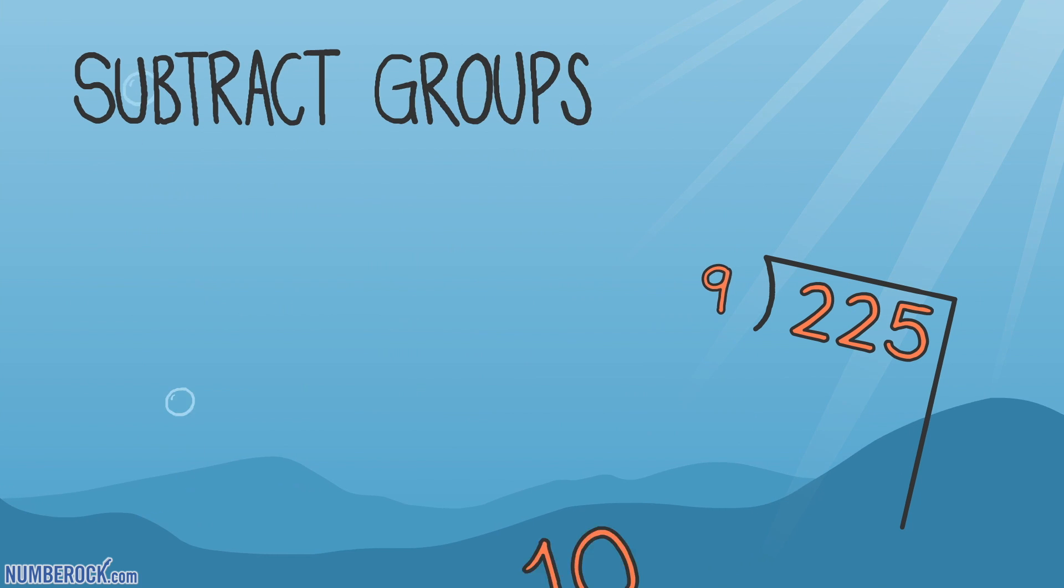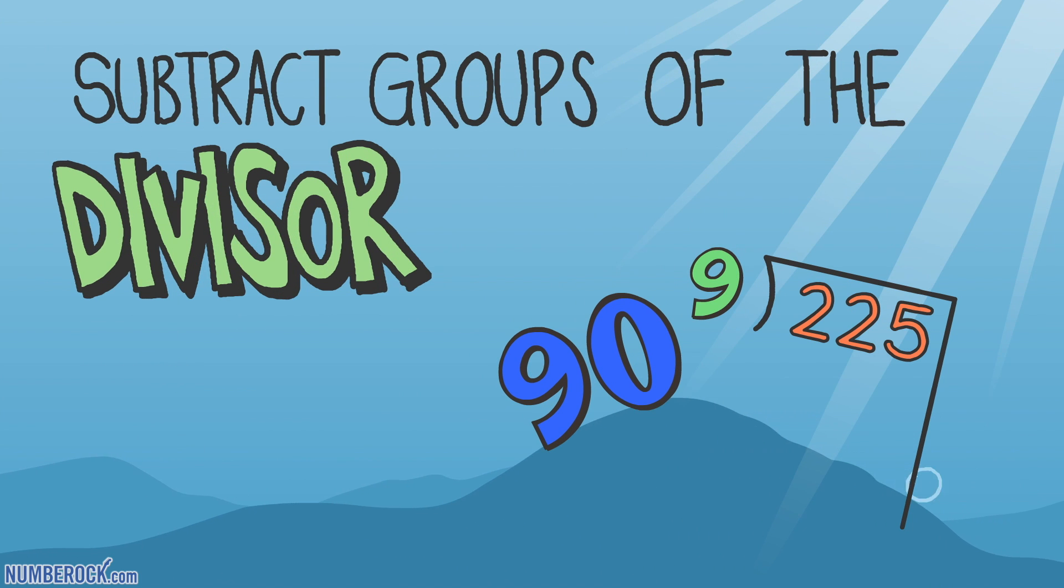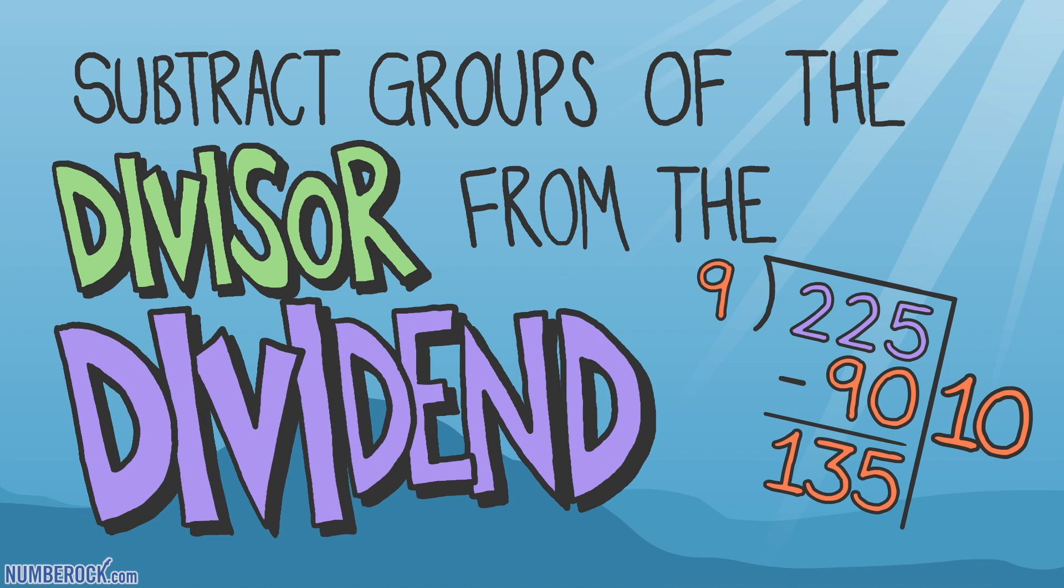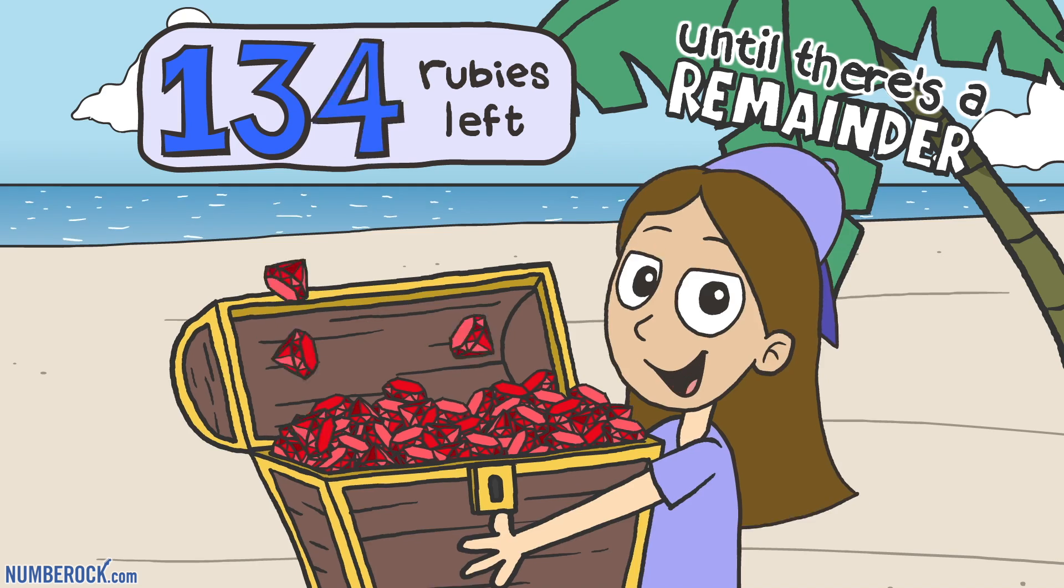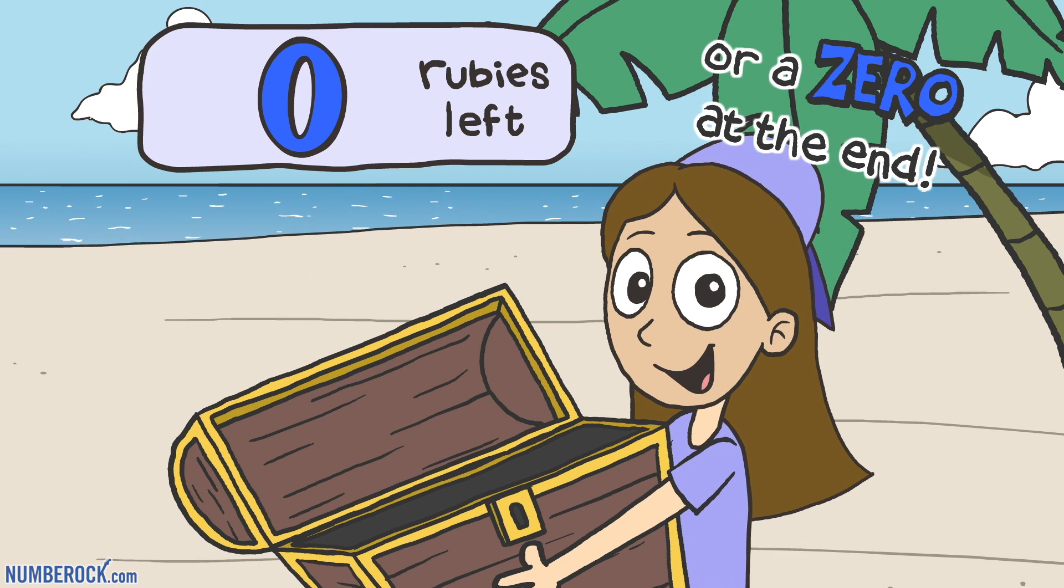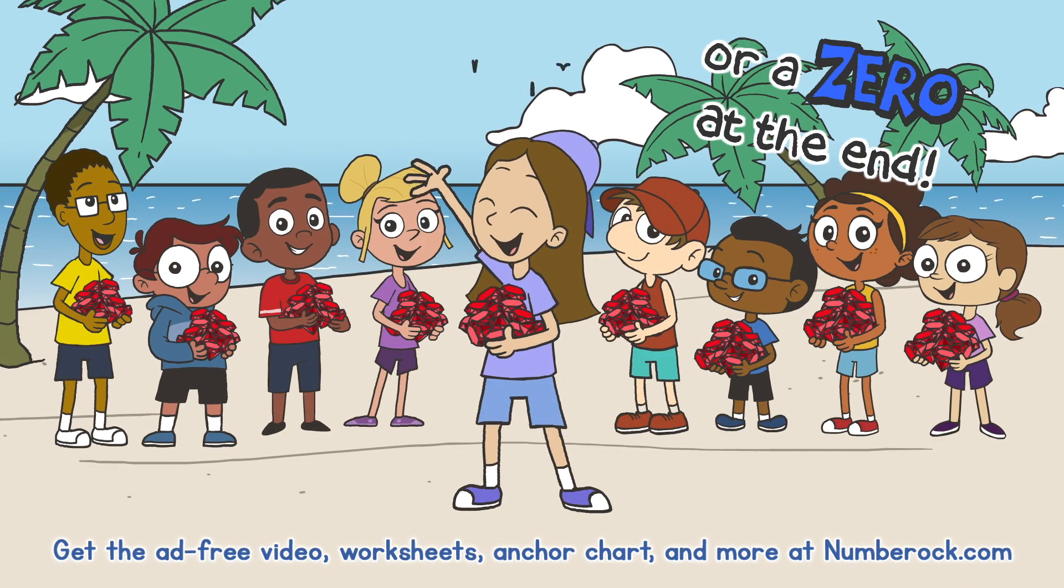Subtract groups of the divisor from the dividend until there's no remainder or a zero at the end.